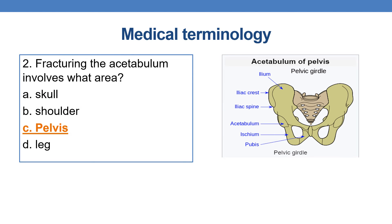Fracturing the acetabulum involves which area? Fracturing the acetabulum involves the pelvis area. You can see the pelvic girdle here — the pelvic bones include the ilium, ischium, and pubis, and this is the acetabulum. So fracturing the acetabulum involves the pelvis area.